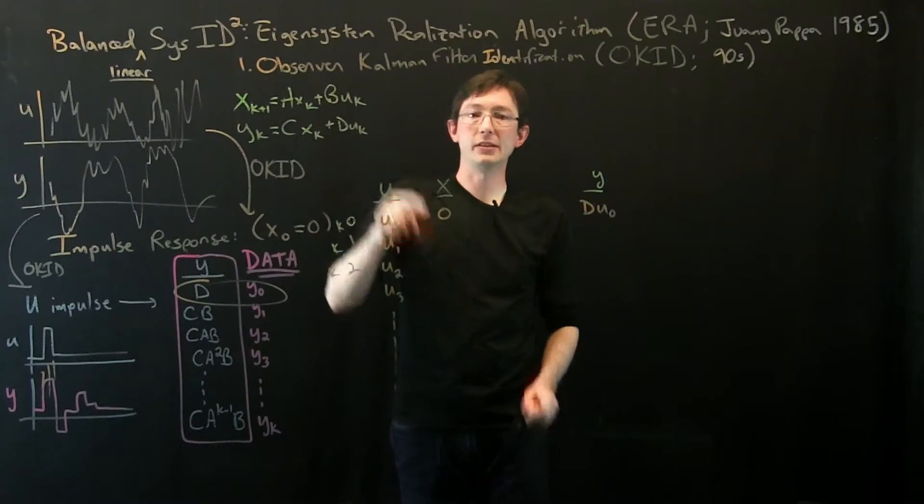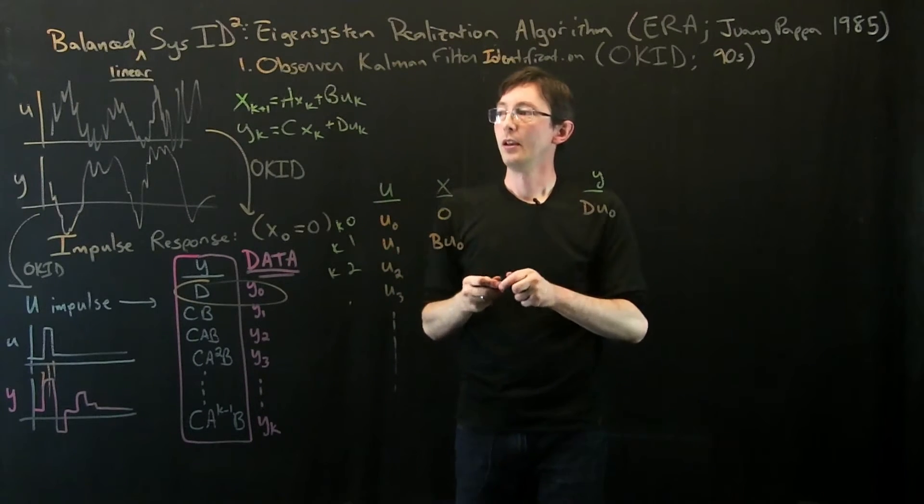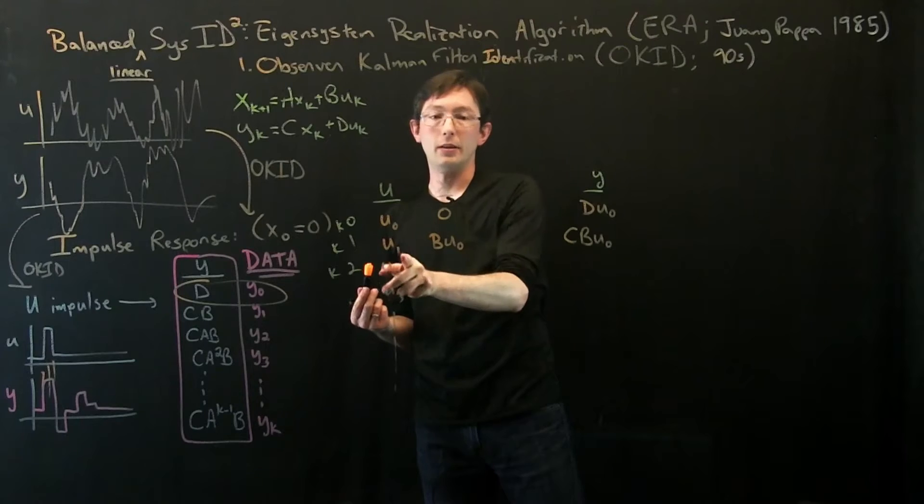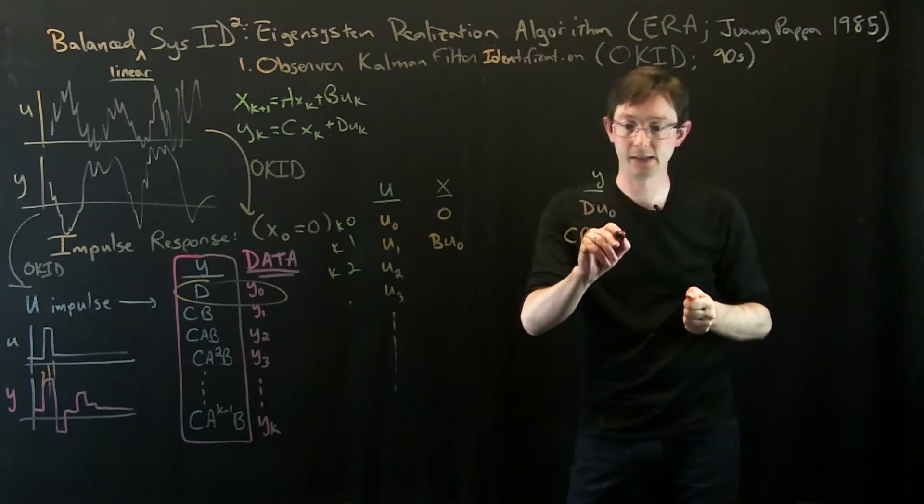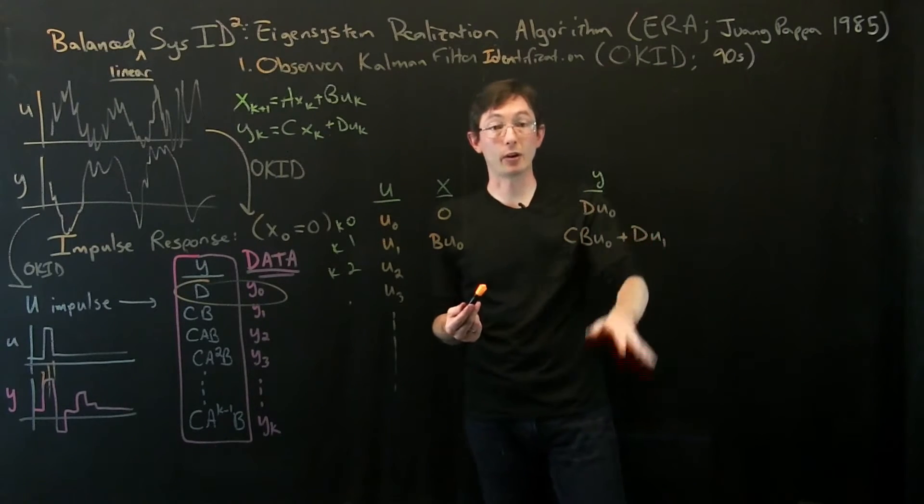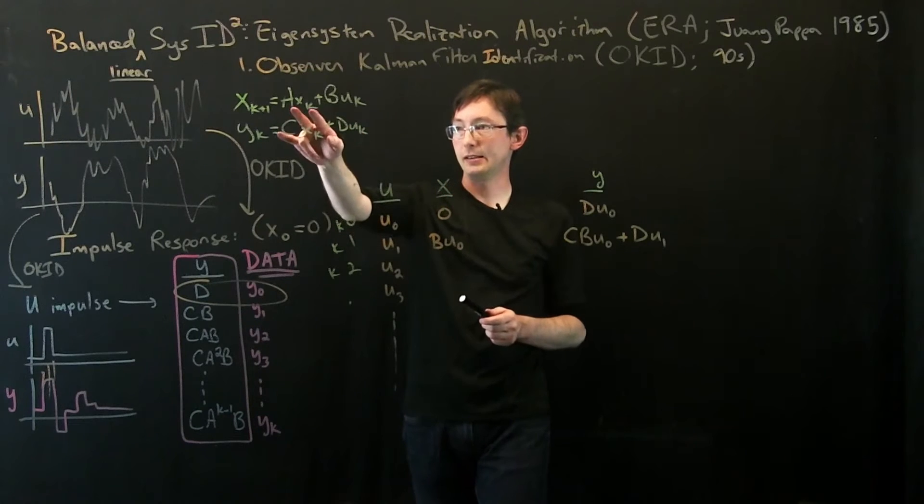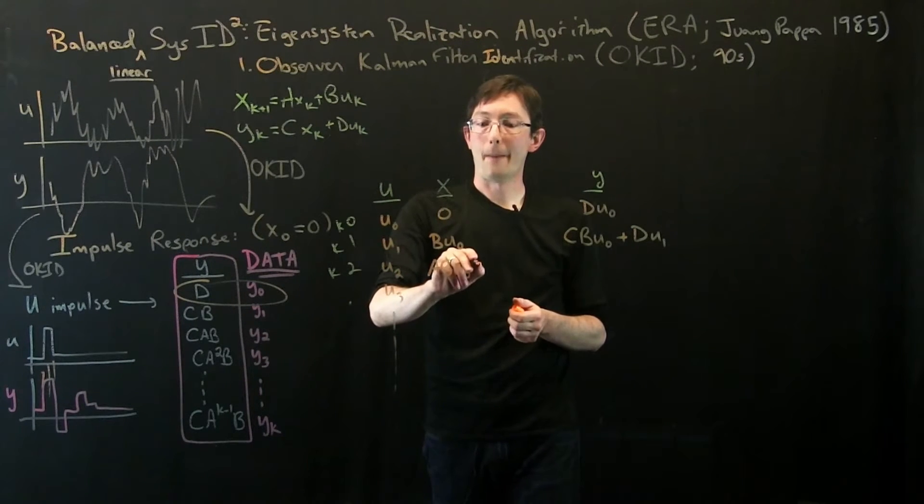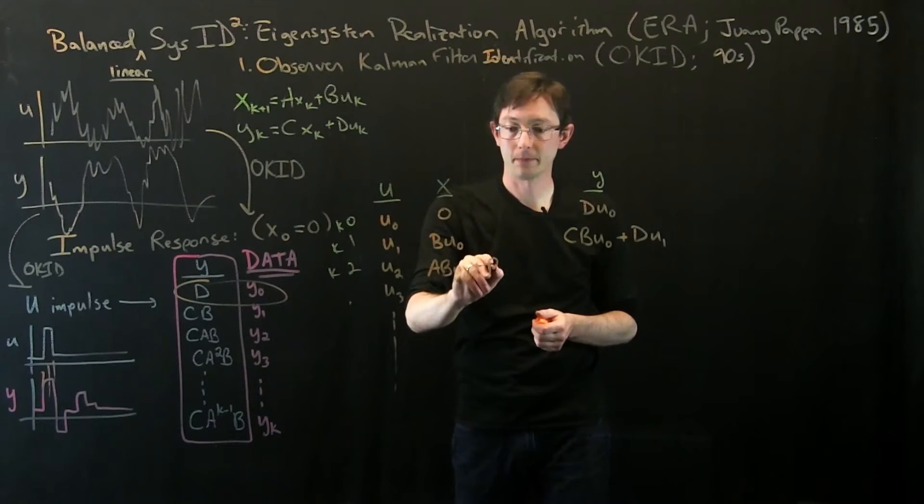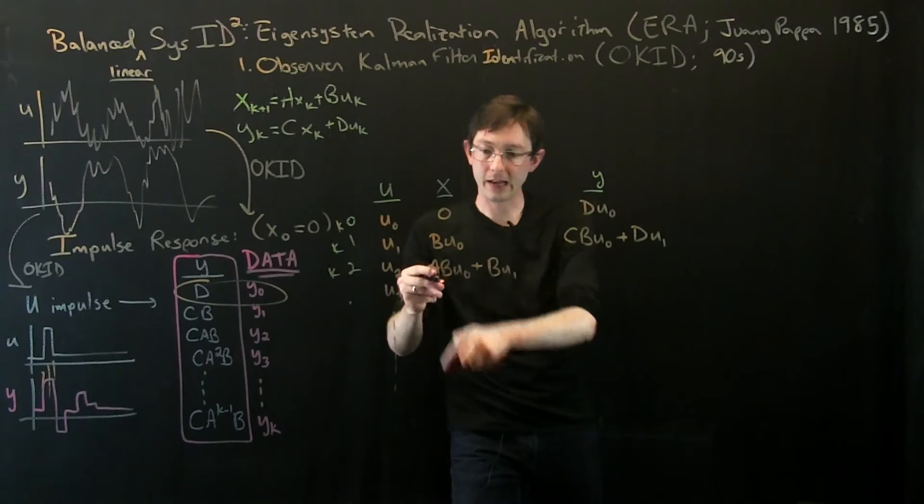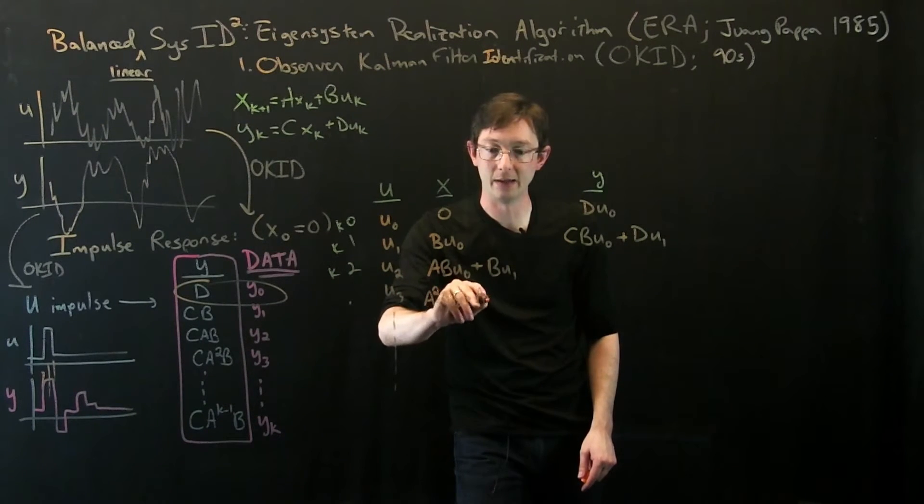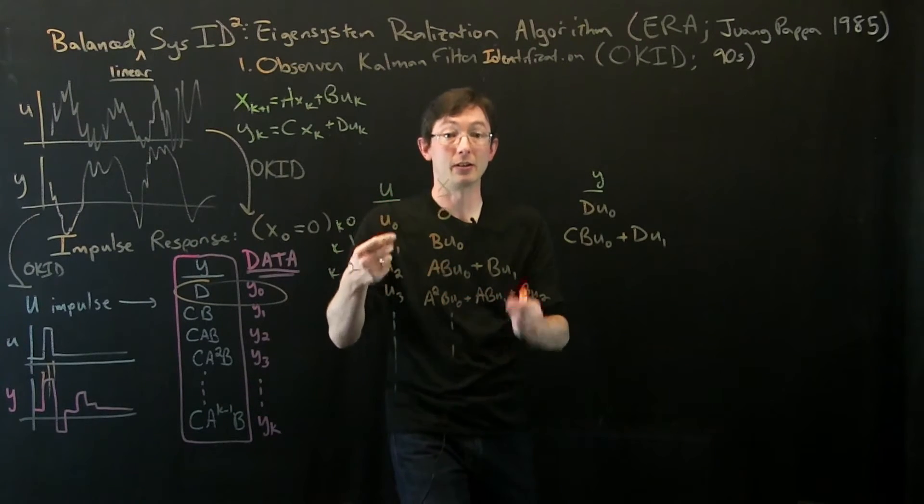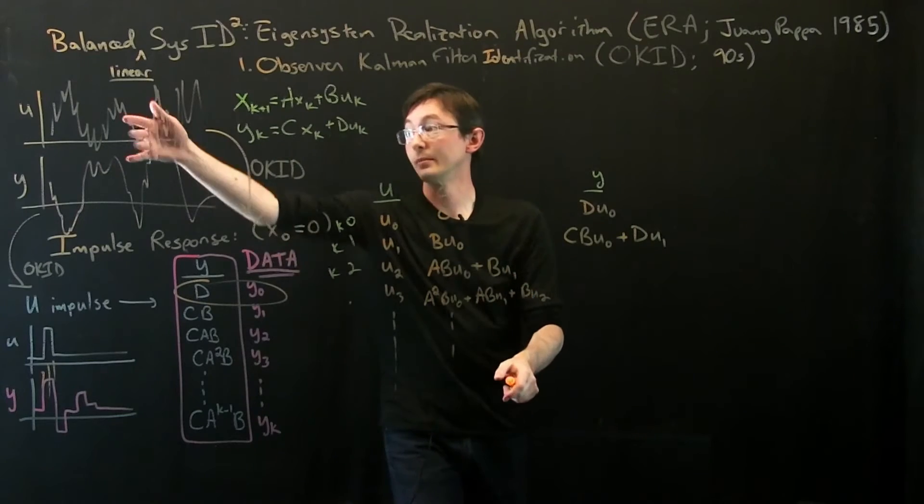But now at time 1, x_1 is B times u_0, so that's B times u_0, and so y_1 is C times B times u_0 but now plus D times u_1 because this is not zero anymore, so plus D times u_1. You can already see this is going to get more complicated than ERA. At time, this is my state at time one, so my state at time two is A B u_0 plus B times u_1. It's getting worse. Next time it's going to be A^2 B u_0 plus A B u_1 plus B u_2 and so on and so forth.